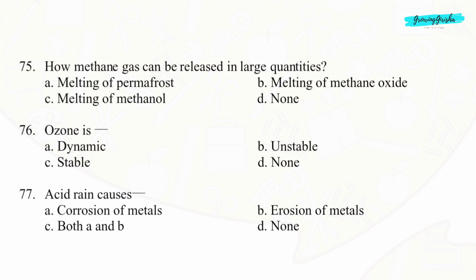Question 75. How can methane gas be released in large quantities? Option A: Melting of permafrost.